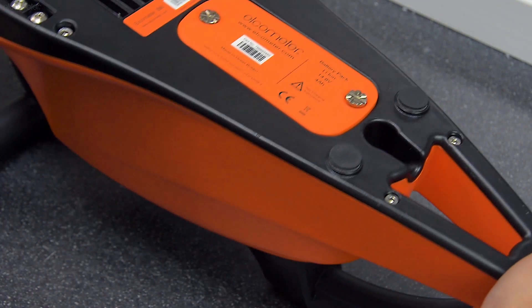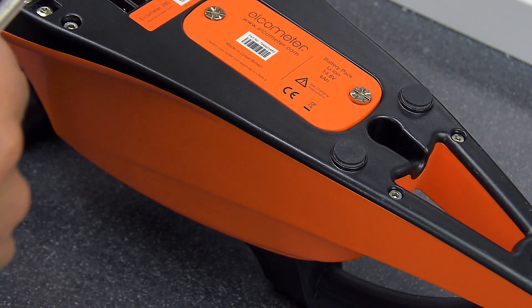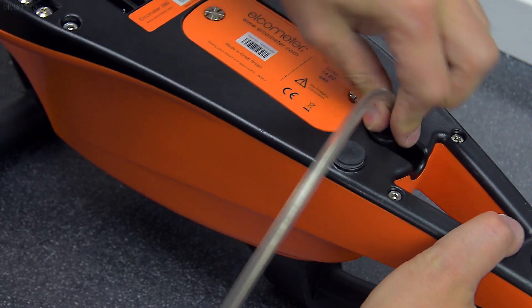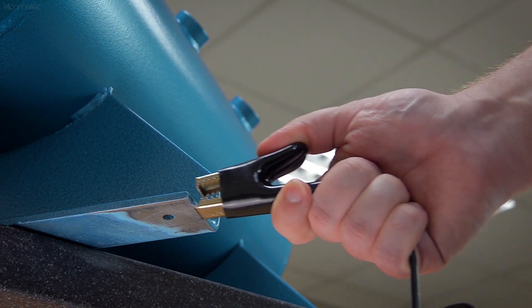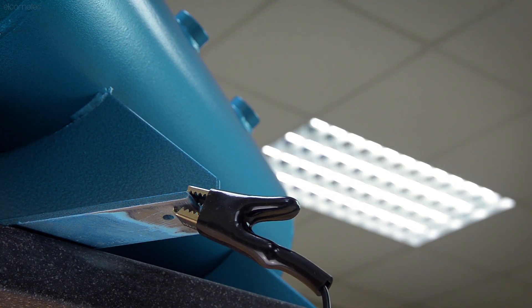With the Elcometer 280 switched off, insert the signal return lead plug into the socket. For the most ideal conditions, you should clip the other end of the earth return lead to an uncoated section of the substrate being tested.